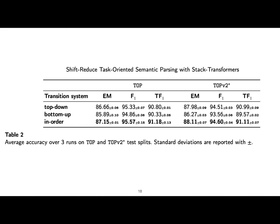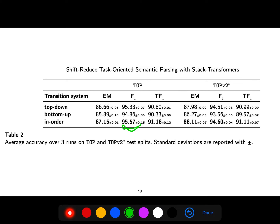The transition system achieves an F1 score of 95 on TOP. After all, TOP and TOP version 2 are relatively simple datasets. They use stack transformers and shift-reduce task-oriented semantic parsing, and the results are really nice.